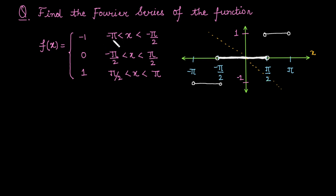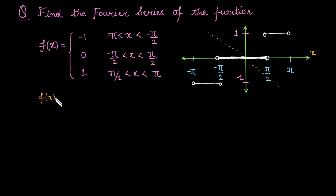We need to judge the overall function for the intervals minus pi to minus pi by 2 and pi by 2 to pi, which is also a symmetric interval. We will proceed mathematically, starting with the function value of minus 1, defined from minus pi to minus pi by 2.